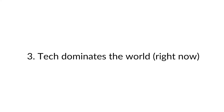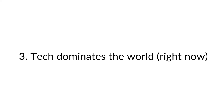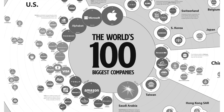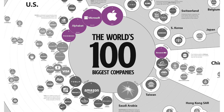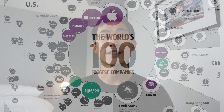The third point is how much technology dominates the current world. Look at the biggest companies right now: Apple, Microsoft, Alphabet, Facebook, Tencent, TSMC. I would also argue that Alibaba, Amazon, and Tesla are tech companies.